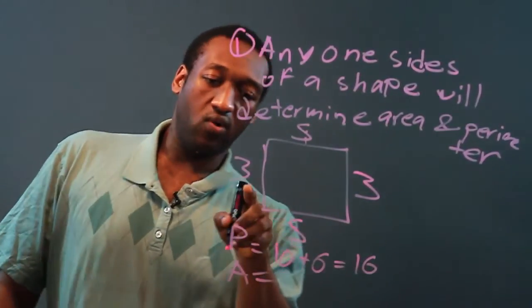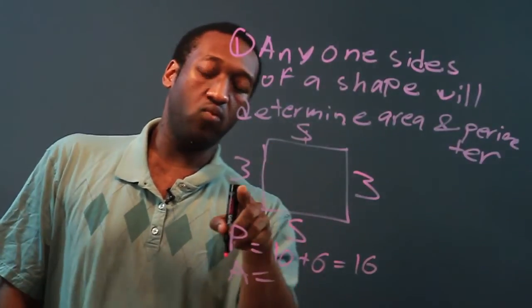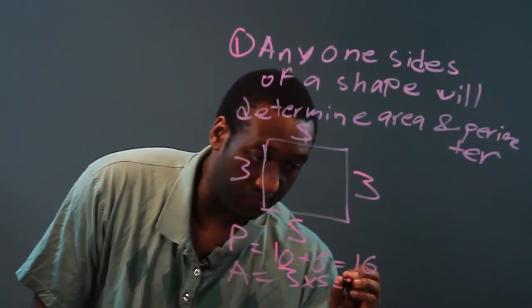The area, I'm going to go ahead and multiply the length and the width, three times five is fifteen.